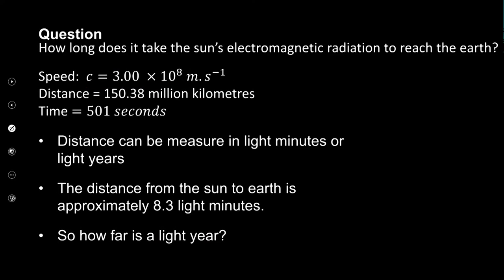If the time is only 501 seconds to travel that huge distance, how much is that in minutes? If we convert 501 seconds to minutes we get that this is approximately 8.3 minutes. It takes light approximately 8.3 minutes to get from the sun to us. We often refer to this unit as a light minute — the distance that light travels in a single minute. It's quite a distance but we use it a lot in physics.